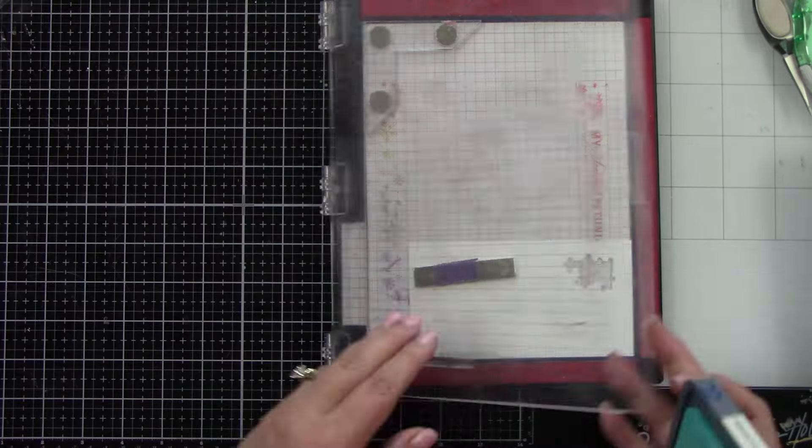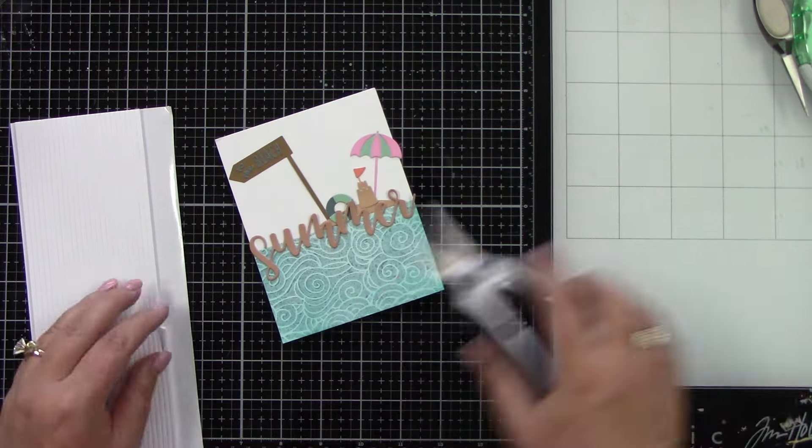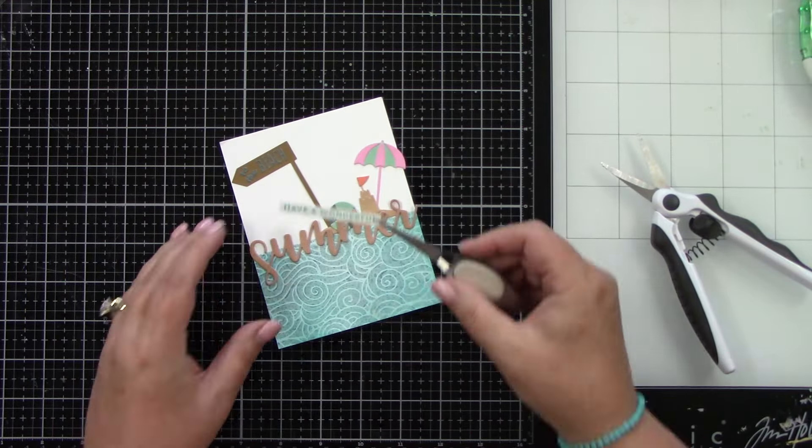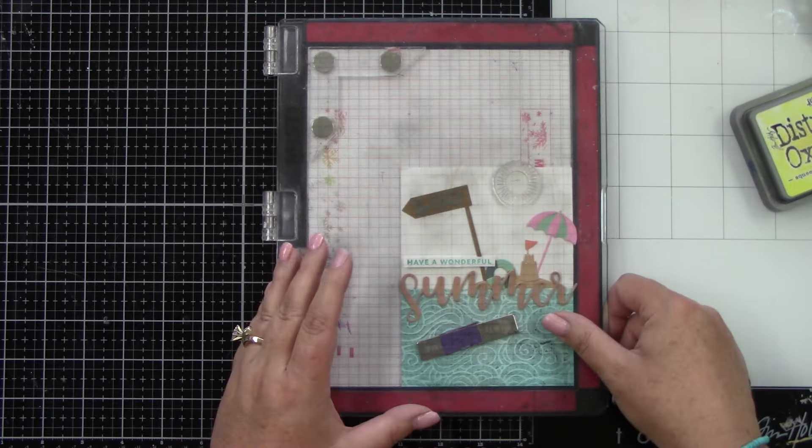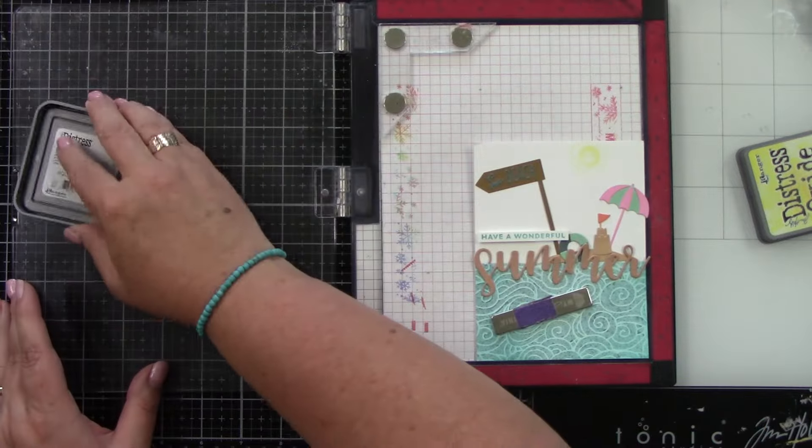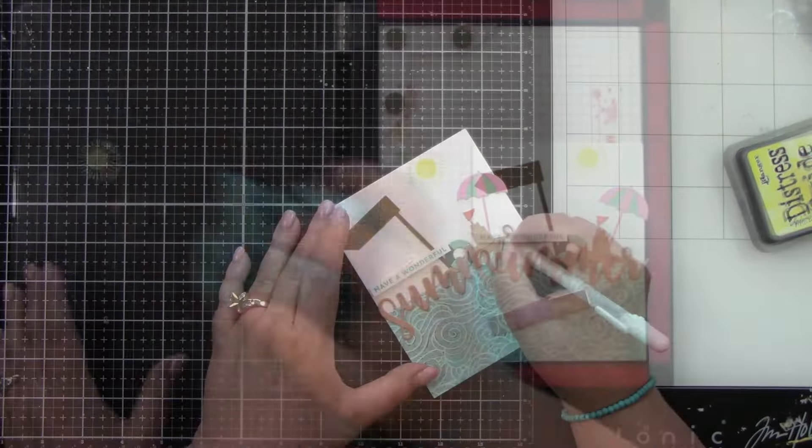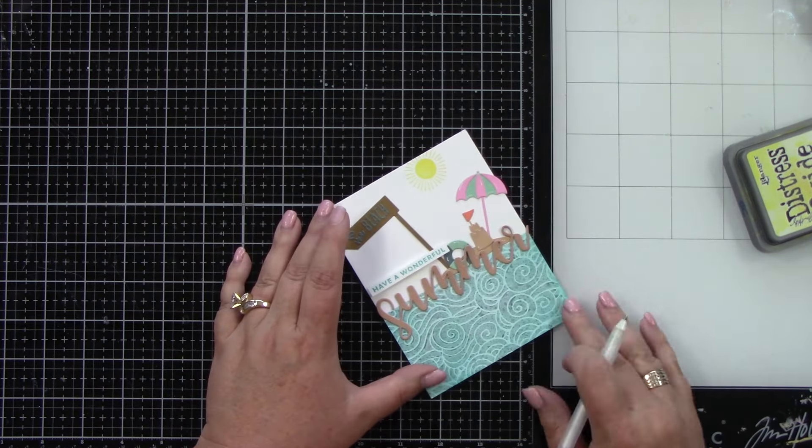Let's do our sentiment. I am doing that from the Hello Summer stamp set. And it says, have a wonderful. And I did that with the peacock feathers. I stamped it with that. I'm going to add some foam adhesive strips, the two millimeter. Place that there. And then I decided to take the little sun from the Hello Summer stamp set. Ink that up with the squeezed lemonade at the top there. It needed something else. And I think that little sun just finishes it off.